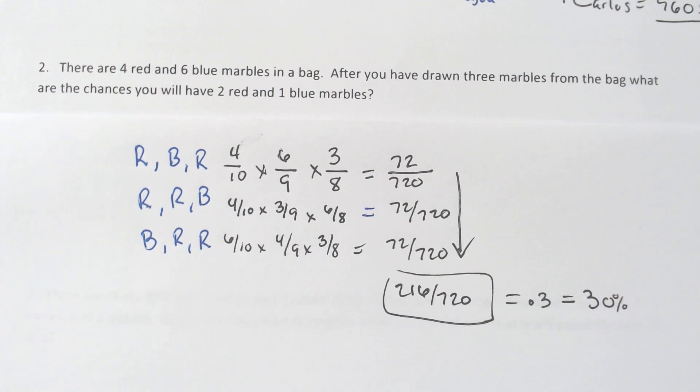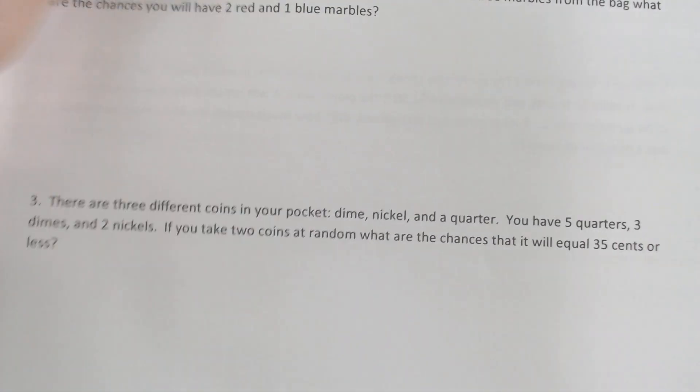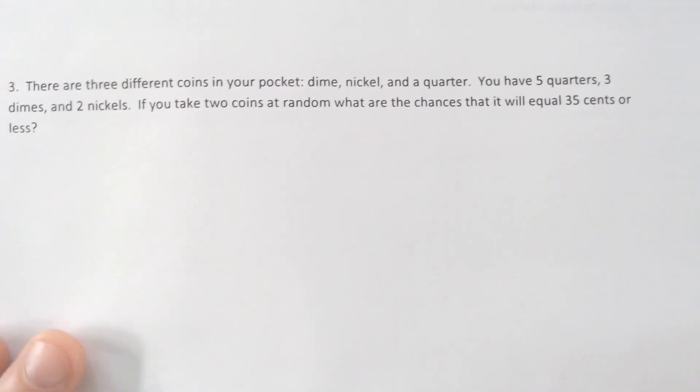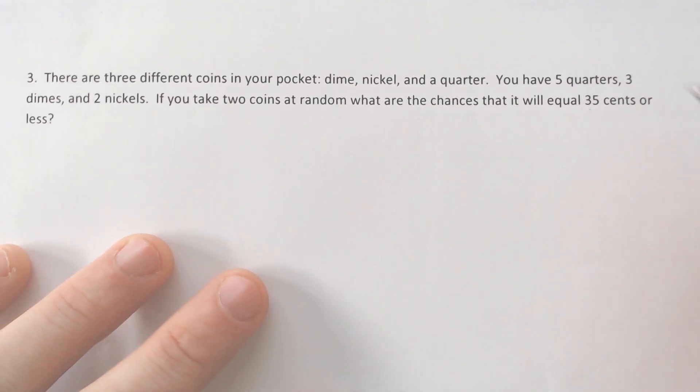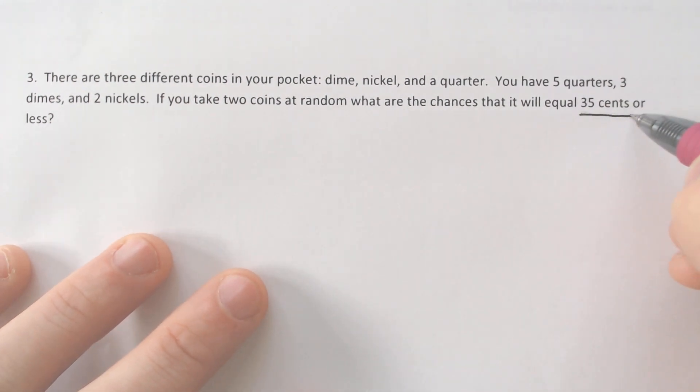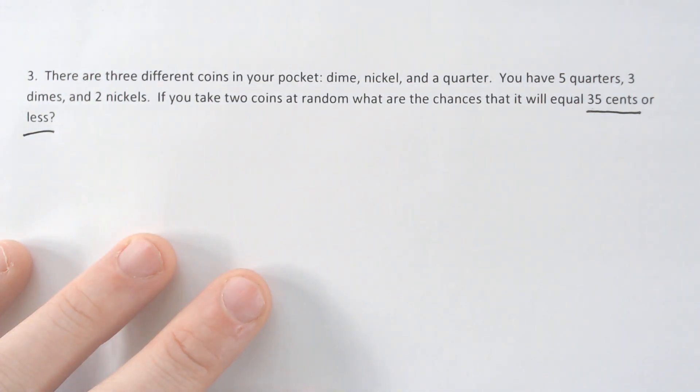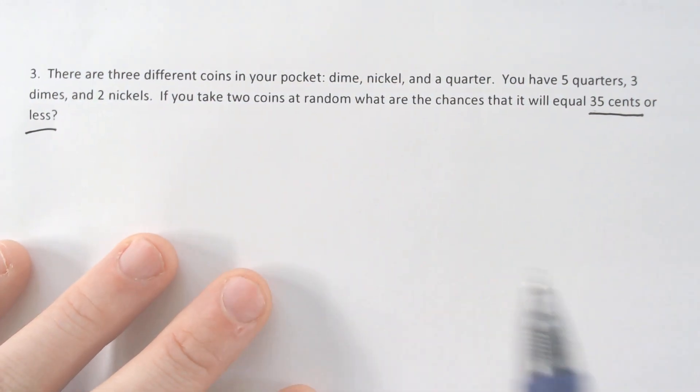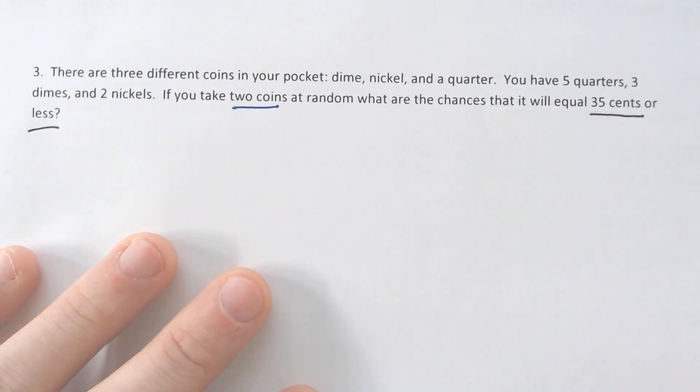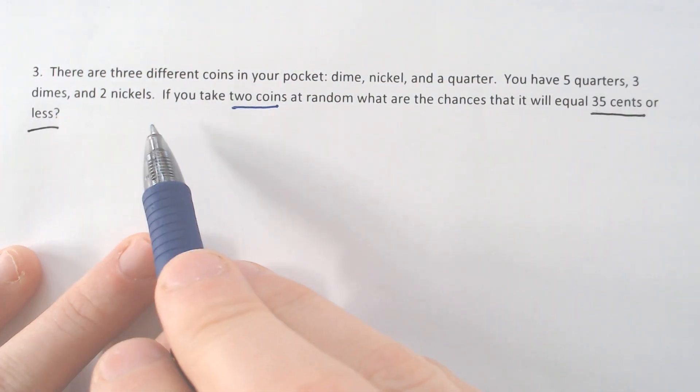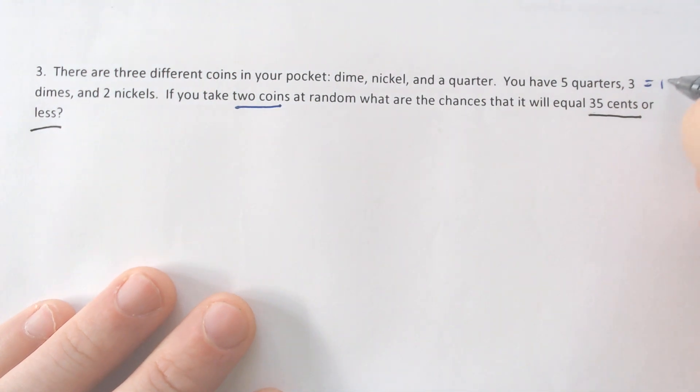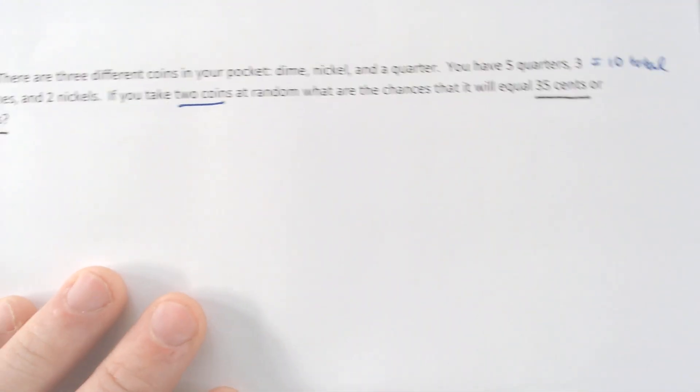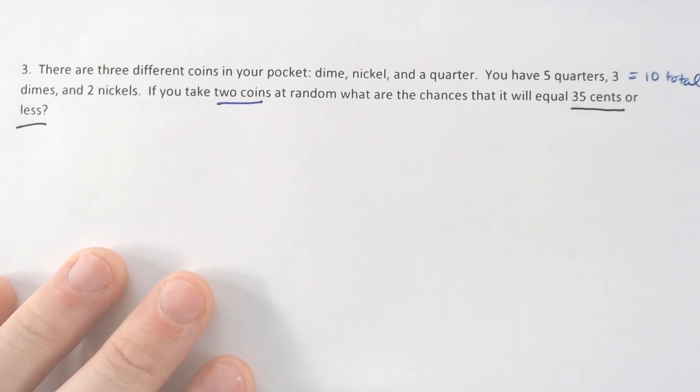Next one, this one's going to be easier and harder all at the same time. You got coins. If you have coins going on, then you have to be a little more careful because each of the probabilities could be a little bit different. So in this case, I want it to equal 35 cents or less. And I'm taking two coins out. So that's a little bit nicer. We got five quarters, three dimes, and two nickels. So five quarters, three dimes, two nickels, five plus three is eight plus two is still out of 10. So there's 10 total.